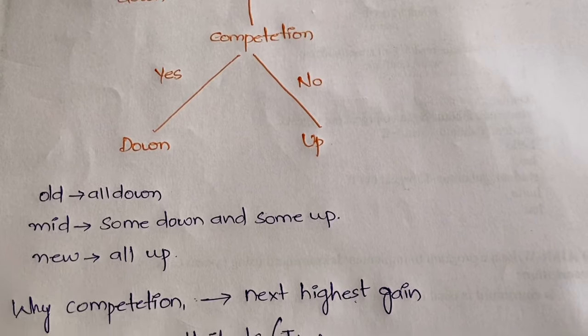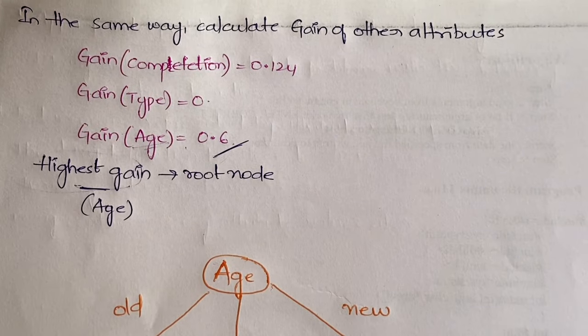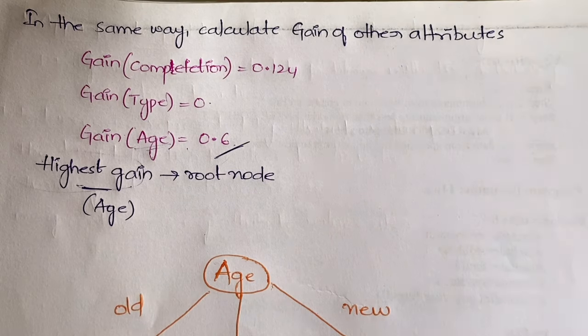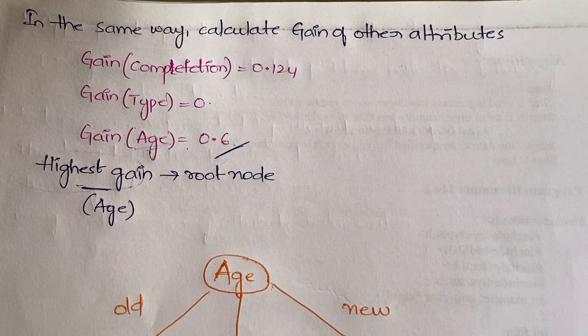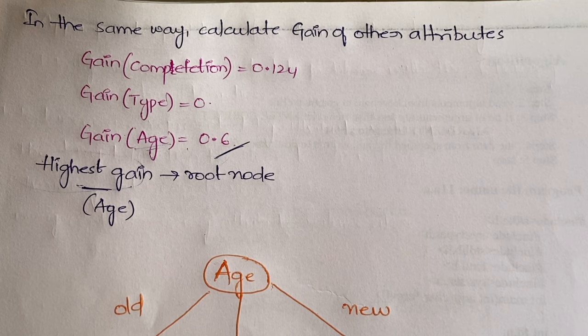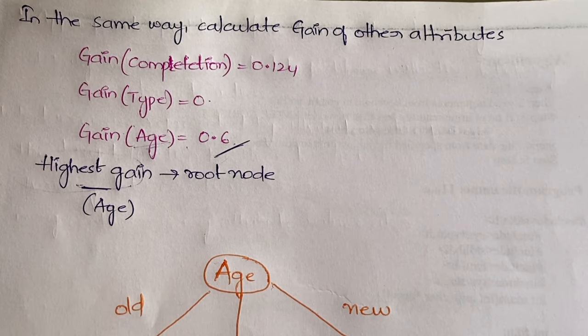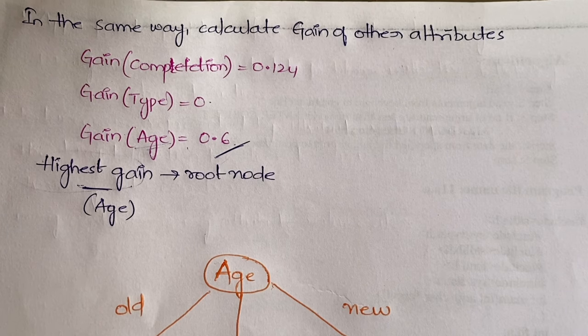This is how you construct the decision tree based on the gain value that you have calculated. What is the important part? Calculating the gain value—you need to do it carefully. The most important task is to first select the target attribute. Selecting the target attribute is very important. This is how the algorithm goes: four steps, three parts of video.